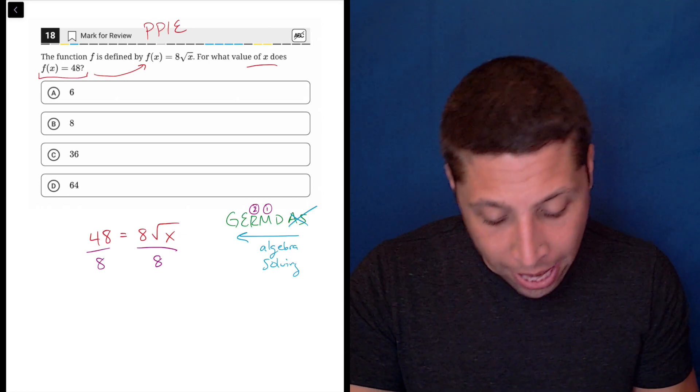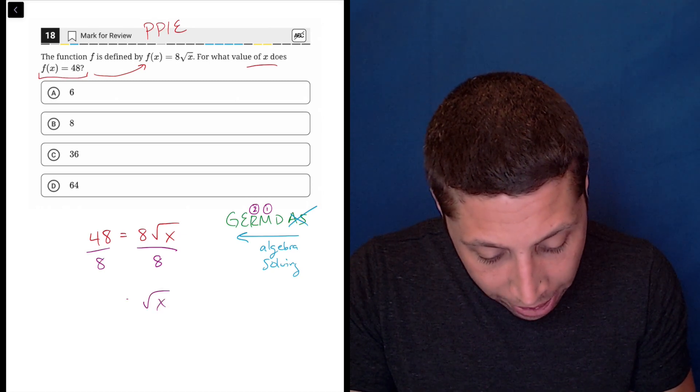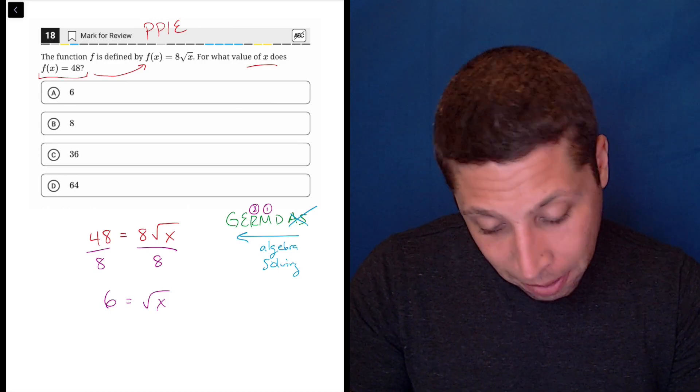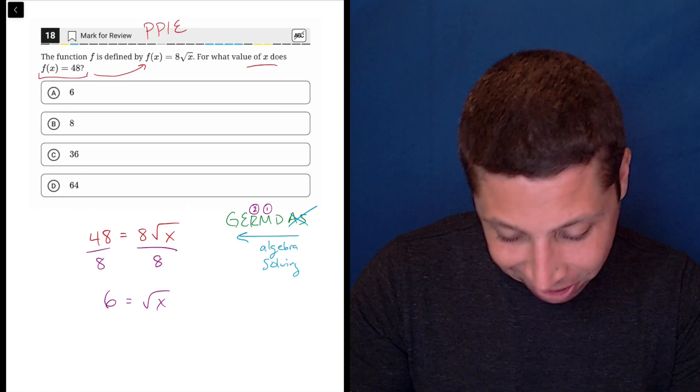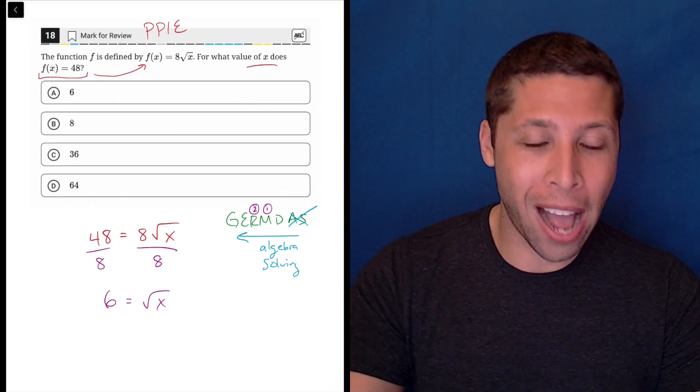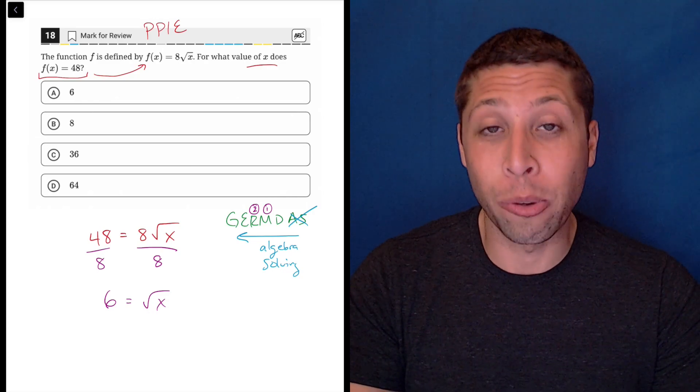So 48 divided by 8, we should now have radical x is equal to 6. And here's where people are going to mess up. I mean, I guess you can't because the answers are not really going to let you mess up. But if we're doing the radical, if we're trying to get rid of the radical, we need to use its opposite. We need to use an exponent.